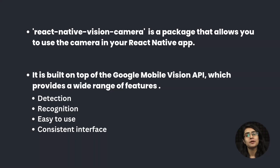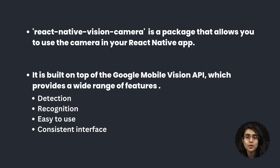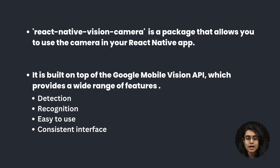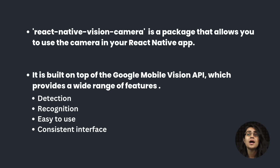React Native Vision Camera is basically a package that allows any React Native app to access and use the camera. It is built on top of Google Mobile Vision API, which provides a wide range of features like detection and recognition, and it has a consistent interface.